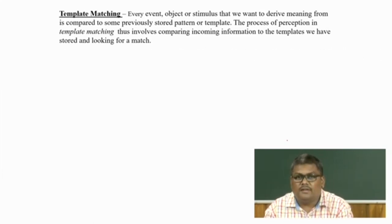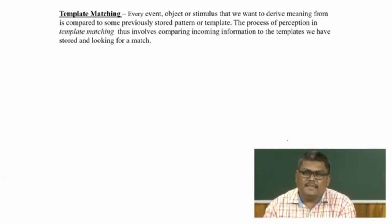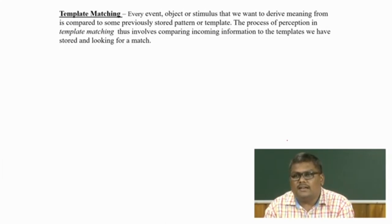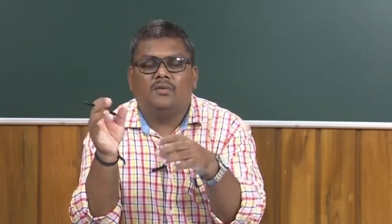Think of templates as stencils. In general use, stencils are used to make figures or words equivalent to the stencil. According to the template matching model, the reverse of what a stencil does happens — we have a fixed stencil or idea in the brain, and whatever information the visual system sends is compared to these pre-conceived stencils. As information matches a stencil, it is recognized and a percept is formed — this is called pattern recognition. If no match is found, the next stencil is tried.